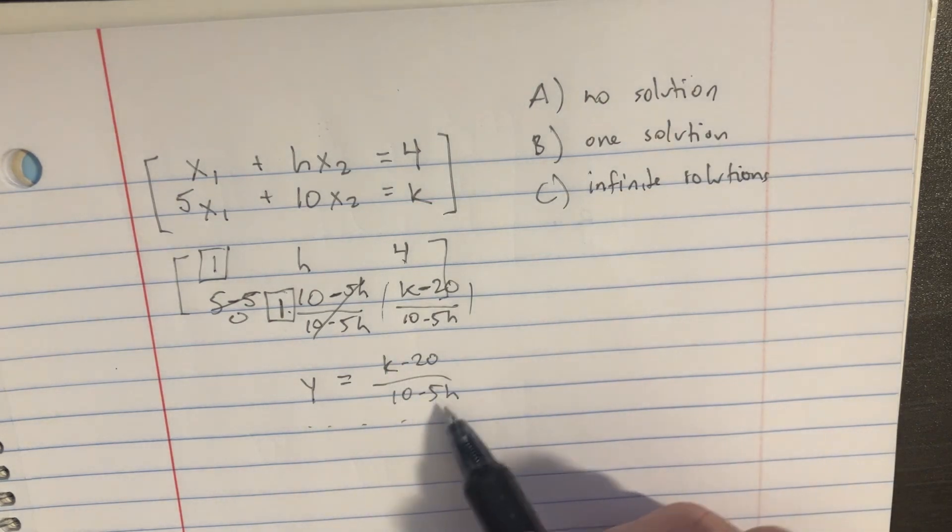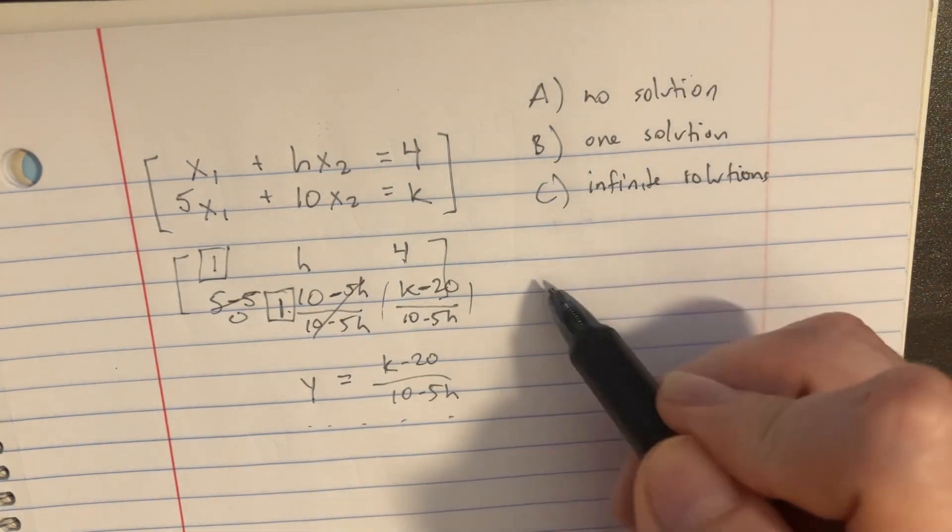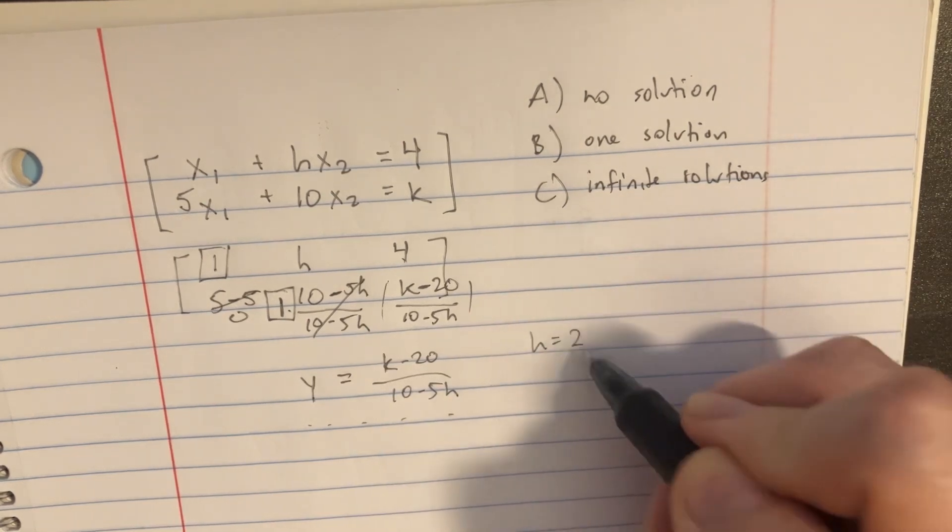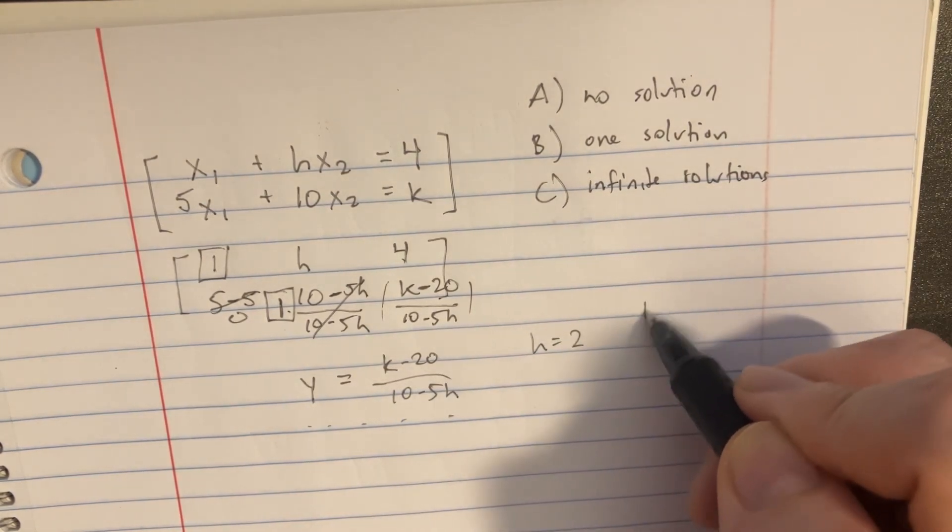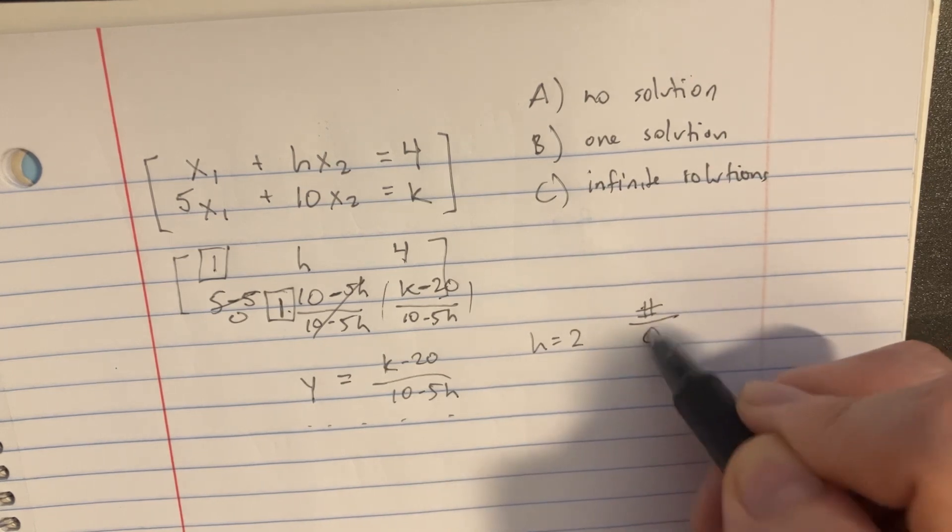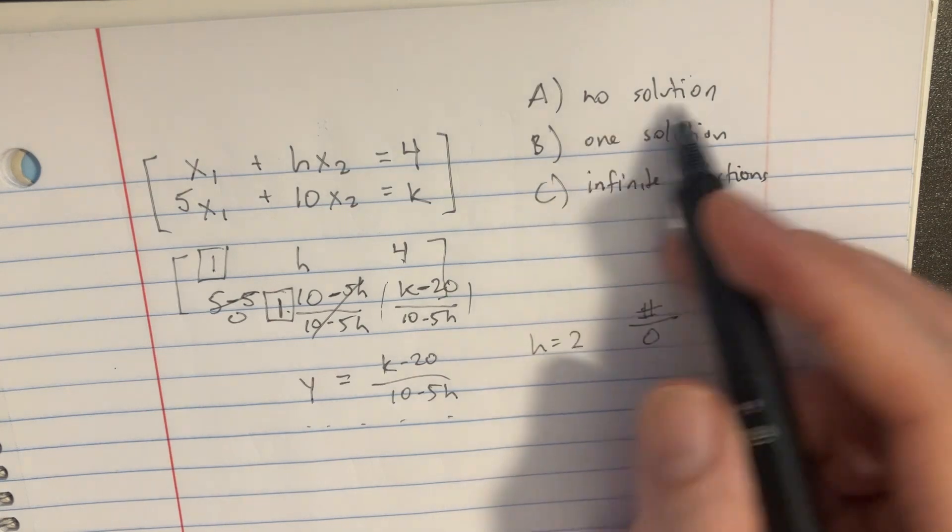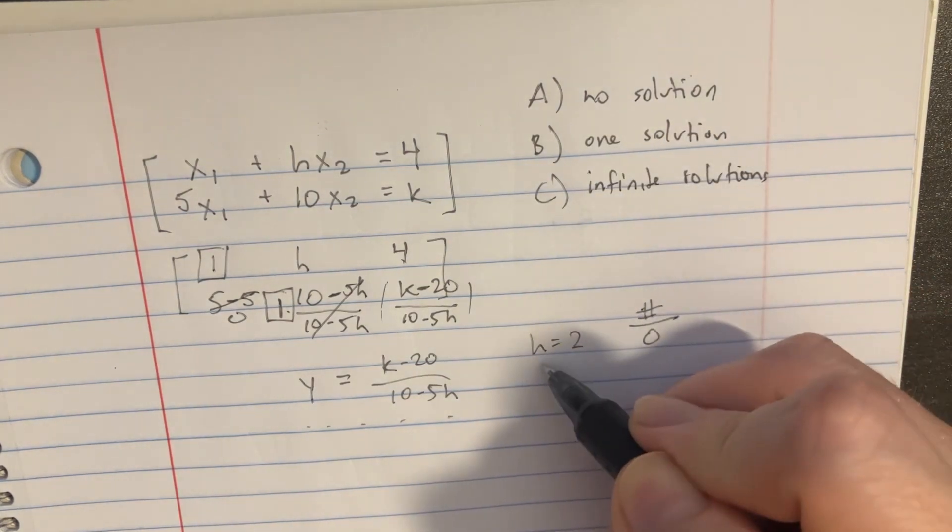From here, we're just looking for the domain and range of this type of thing. So if we put 2 for h, if h equals 2 in the bottom, then we get some number divided by 0. So that wouldn't be very cool. But that is going to be one of these types of things.